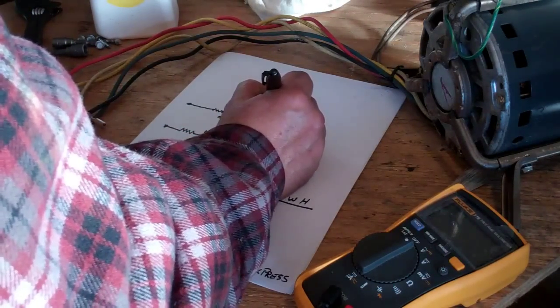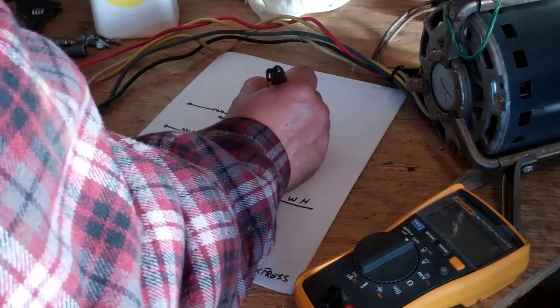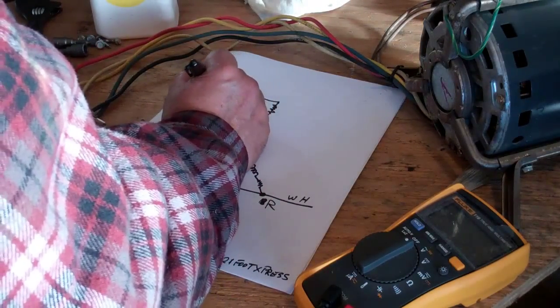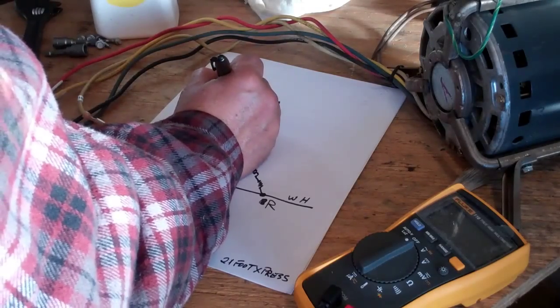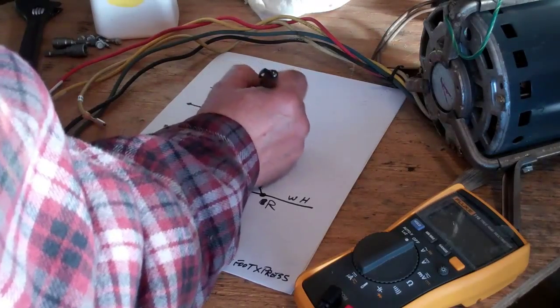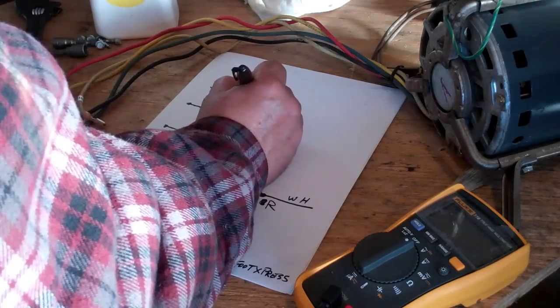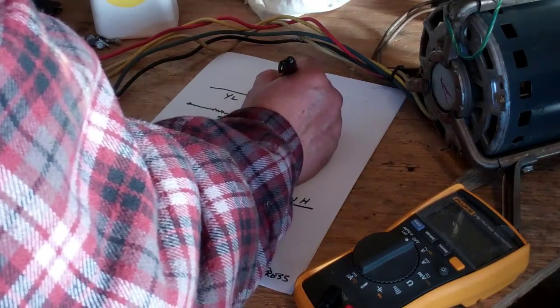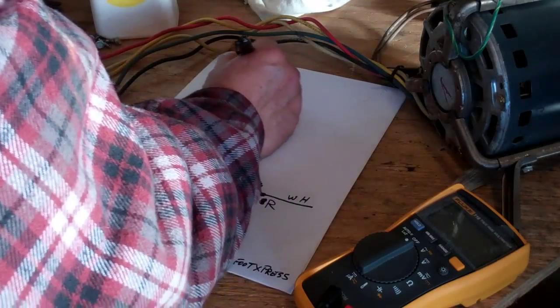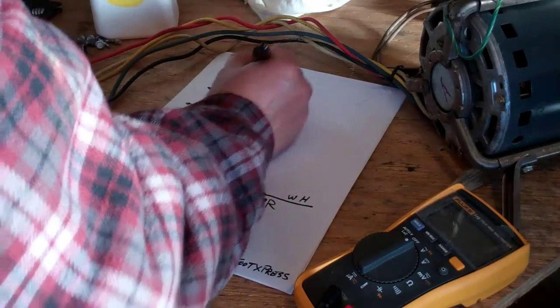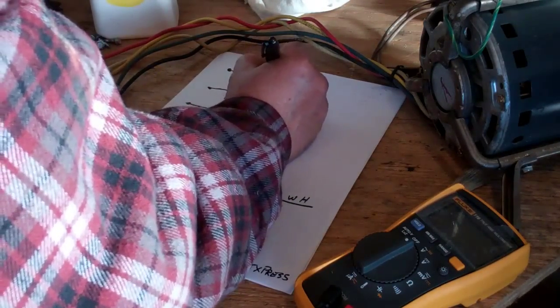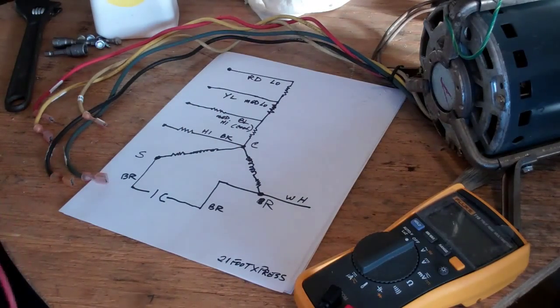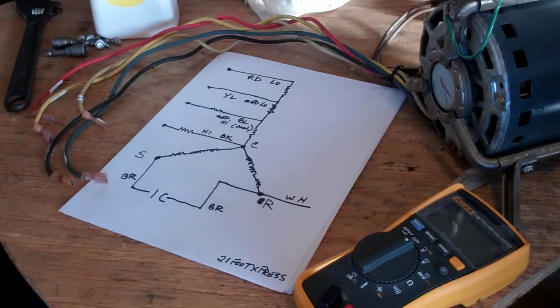There should be another resistor right in here. And this line would be yellow and it would be medium low. And then there would be another resistor up here to another line and this would be red and this would be low.